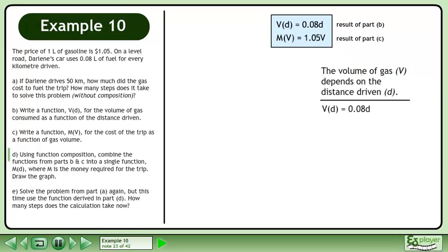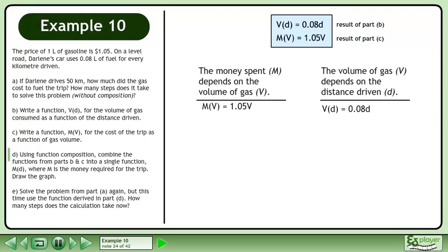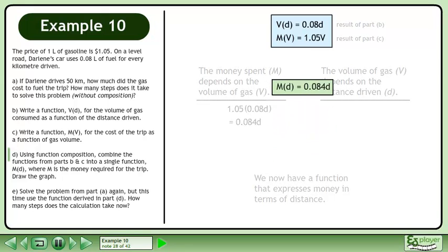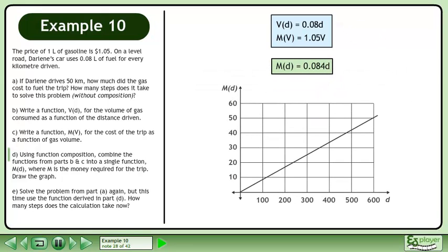The volume of gas depends on the distance driven, and the money spent depends on the volume of gas. Replace V with 0.08D. This gives us 1.05 times 0.08D. The composite function is M(D) equals 0.084D. We now have a function that expresses money in terms of distance. Finally, we'll draw the graph of the function, which shows the amount of money a trip costs as a function of the distance driven.